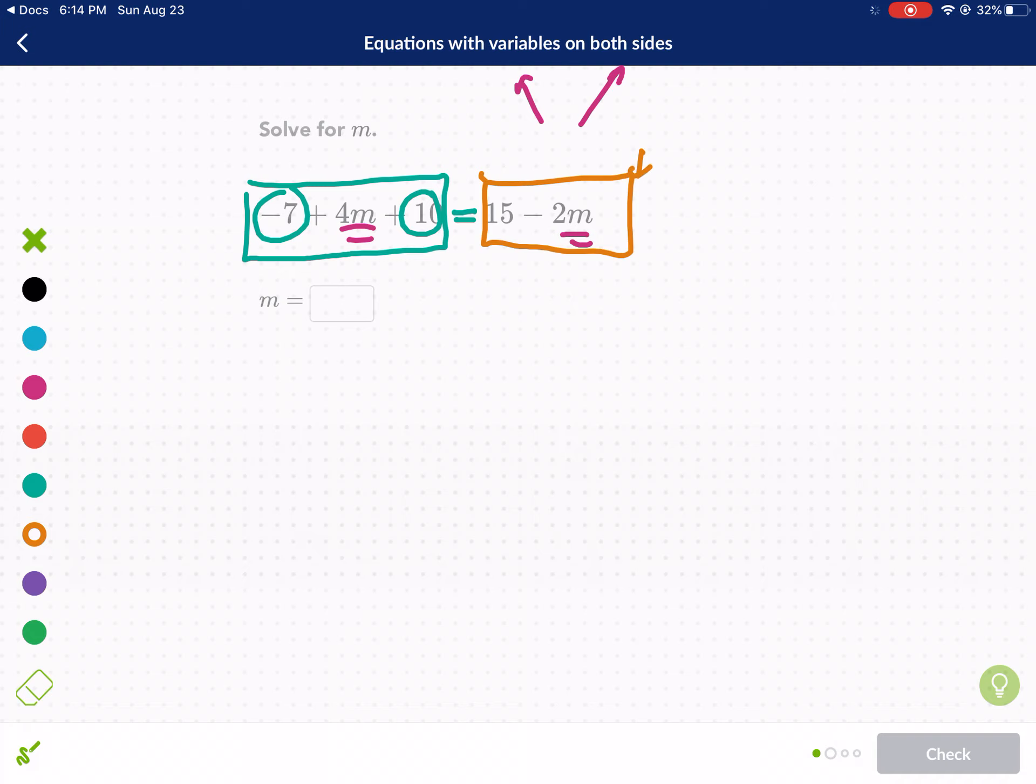Always look to see if something can be combined on one of the sides of the equal sign before proceeding. On the right side here you can see that we can't combine anything. So we're going to move on to the left side and we can combine the negative 7 plus 10. So negative 7 plus 10 gives us 3. The 4m cannot be combined with the 3. So we write 3 plus 4m equals 15 minus 2m.